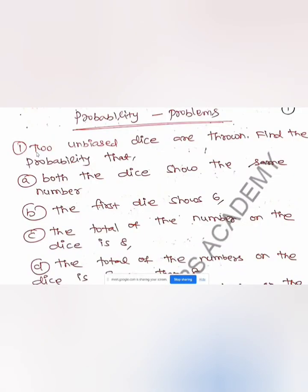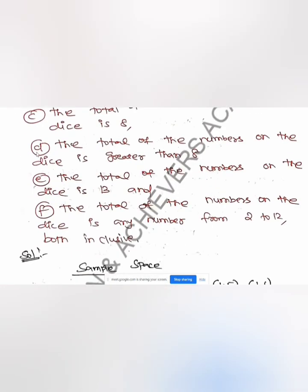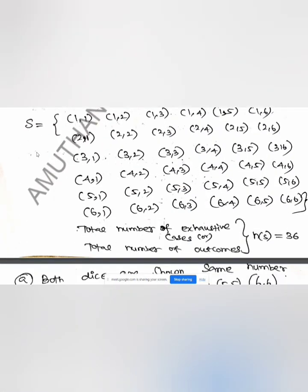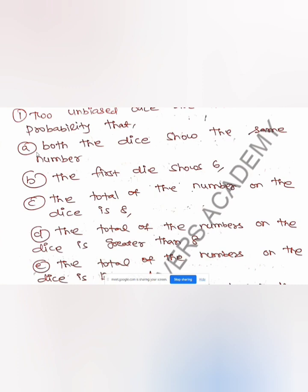So, what are the possibilities? There are 36 possibilities — that is the number of exhaustive cases. Now, let's go to the first problem. Both the dice show the same number.